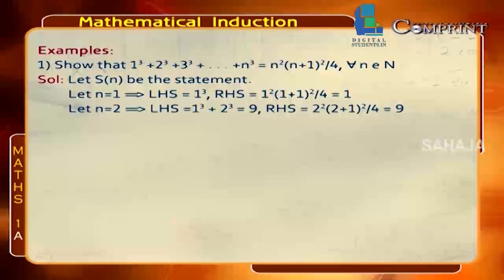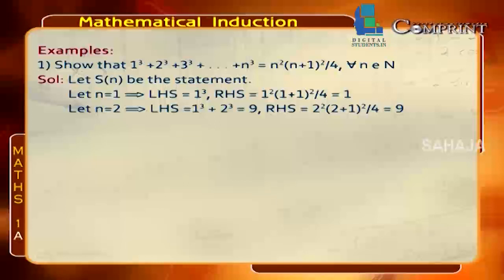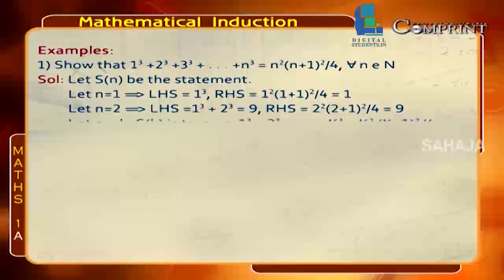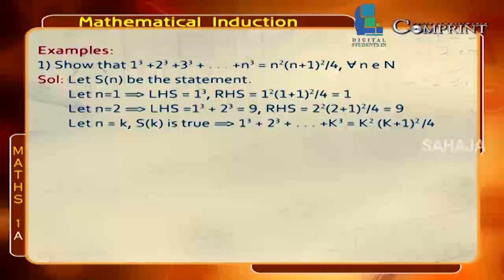For n = 2, LHS = 1³ + 2³ = 1 + 8 = 9. RHS = 2²(2+1)²/4 = 4×9/4 = 9. So LHS = RHS, which is true. Now suppose S(k) is true, i.e., 1³ + 2³ + … + k³ = k²(k+1)²/4.